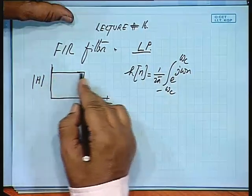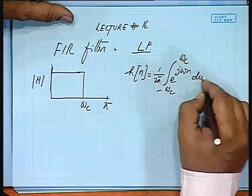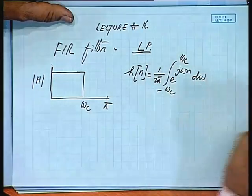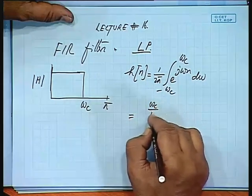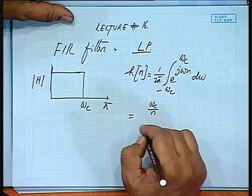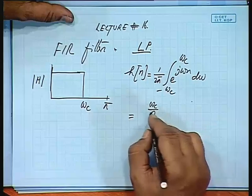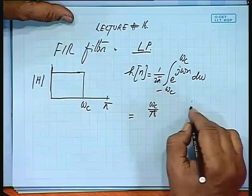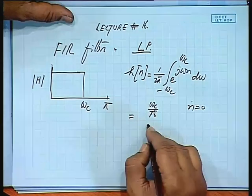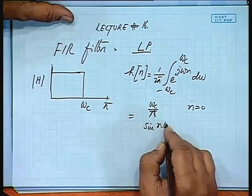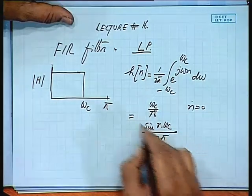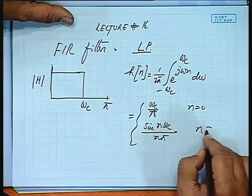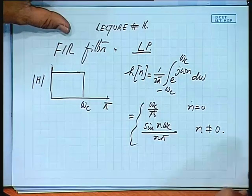This is an ideal low-pass filter. The integration d-omega gives omega_c divided by pi for n equal to 0, and sin(n·omega_c) divided by (n·pi) for n not equal to 0. So this is an ideal filter.